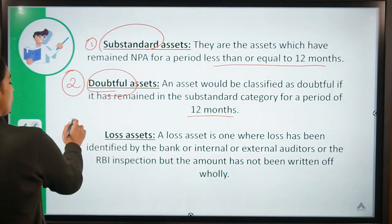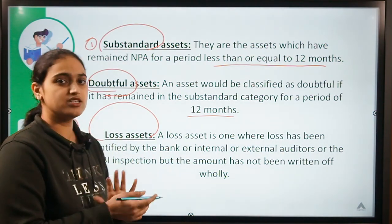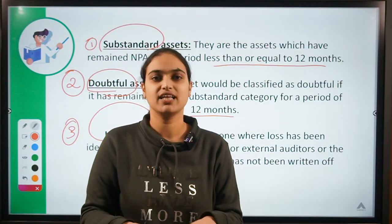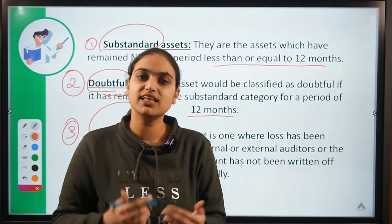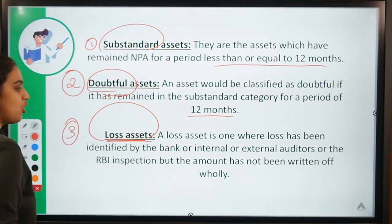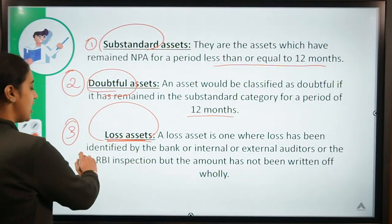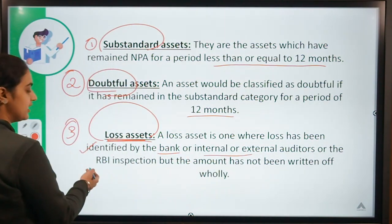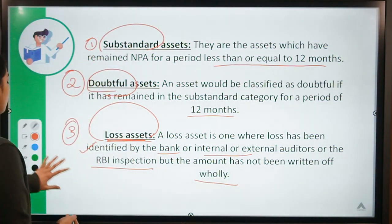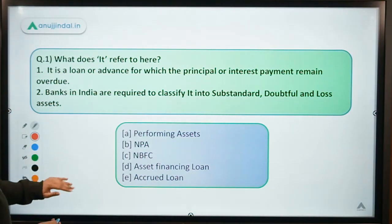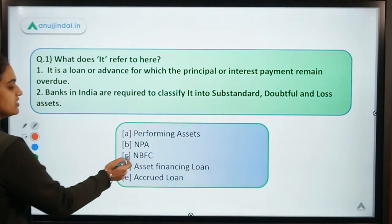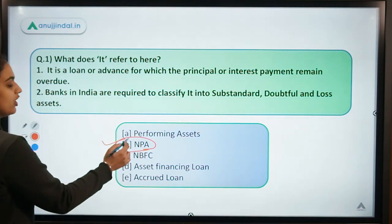The third category is loss assets. At times, certain loans have been recognized by the banks, by RBI inspection, or by auditors as not going to be repaid anymore, but the banks have not yet written them off. They are shown under the category of loss assets — it's an asset where loss has been identified by the bank, auditors, or RBI inspection, but the amount has not yet been written off wholly. So these are the three categories under which NPAs are classified in India. The concept being talked about here is NPA — Non-Performing Assets.